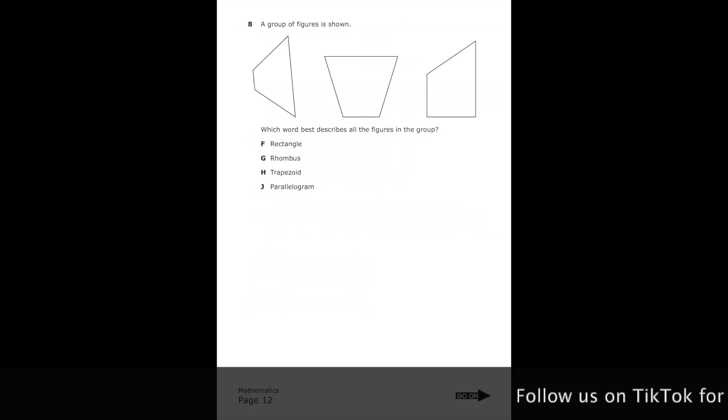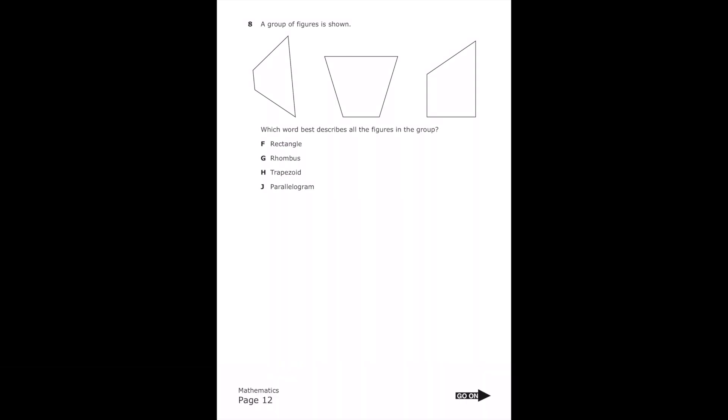This is number eight from the 2022 third grade math STAR test. A group of figures is shown. Which word best describes all the figures in the group? So they all have four sides, and I noticed that they all have one set of parallel sides. All three of them do.